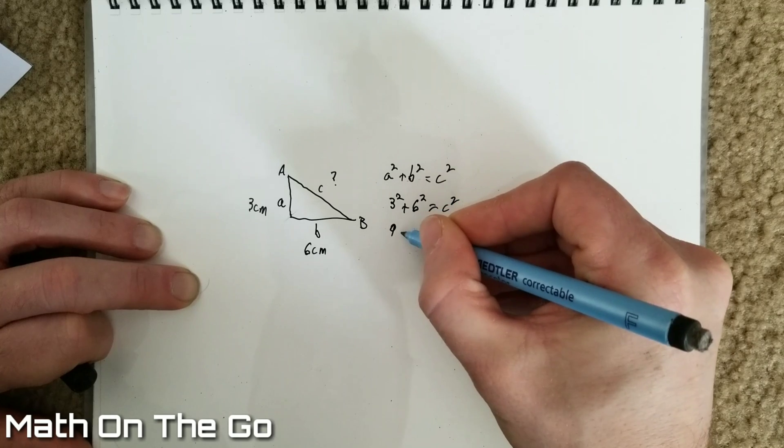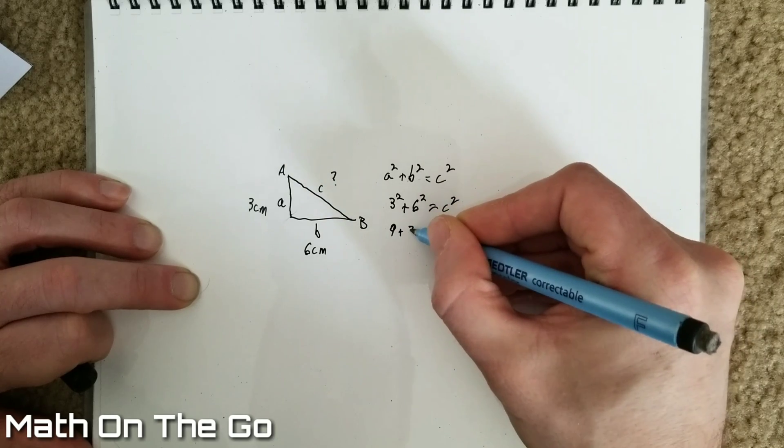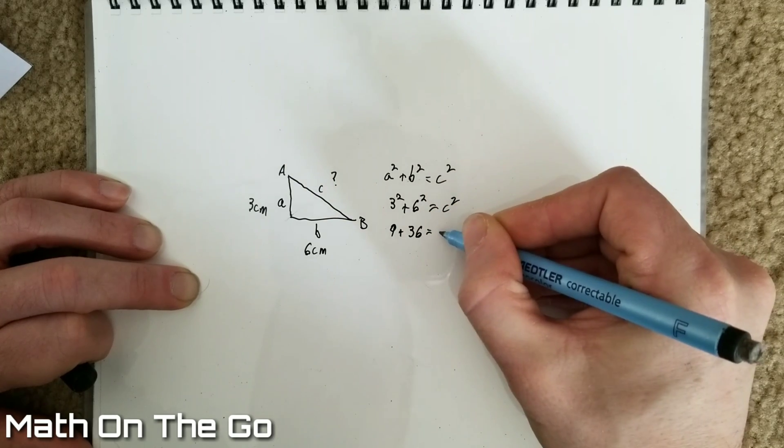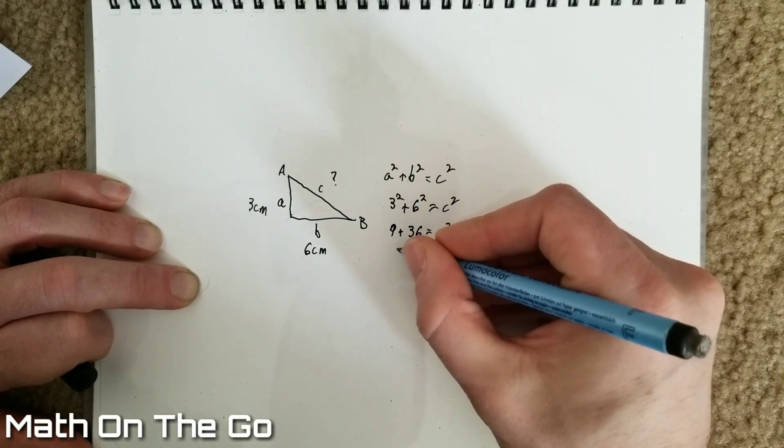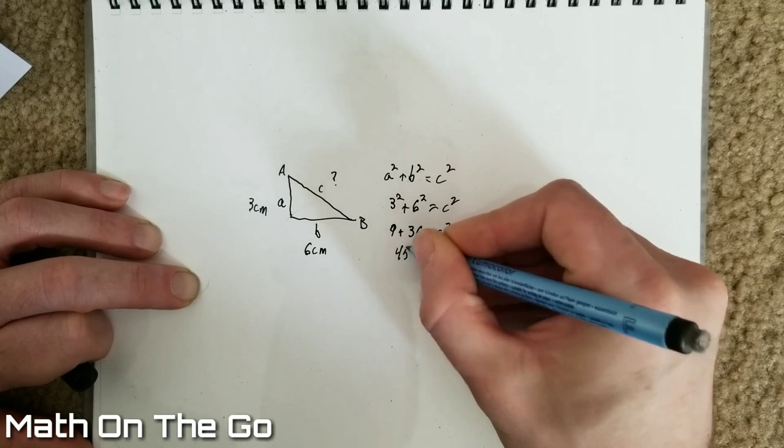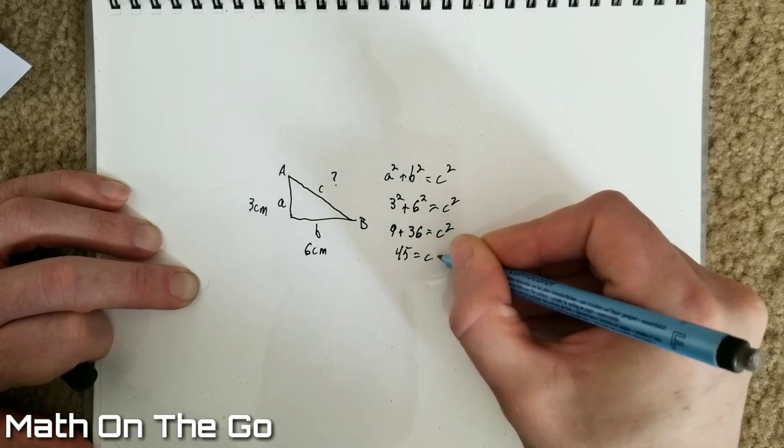So, three squared is nine plus 36 equals C squared. So, 36 plus nine is 45 equals C squared.